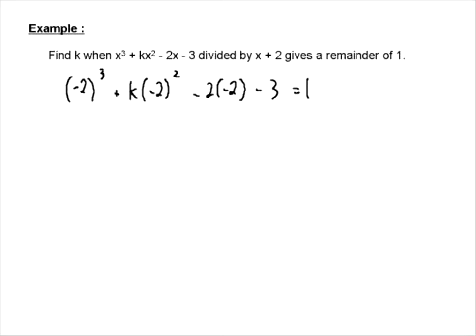So negative 2 cubed becomes negative 8 plus negative 2 squared is 4, so we're going to have 4k plus 4 minus 3 equals 1. So this is going to become 4k and negative 8 plus 4 is negative 4 minus 3 is minus 7 is equal to 1, so 4k is equal to 8, so k has to equal 2.